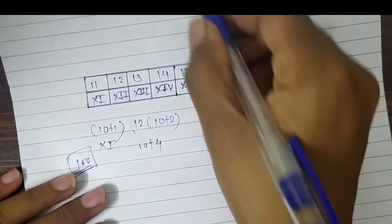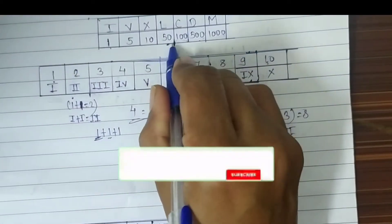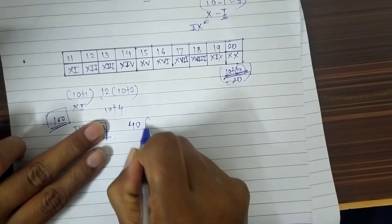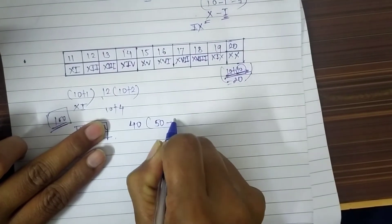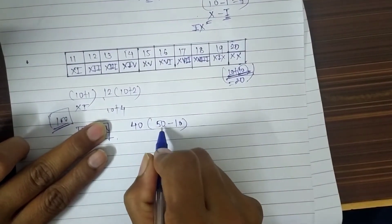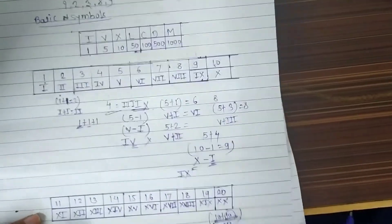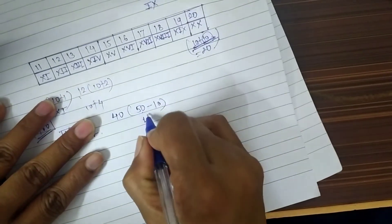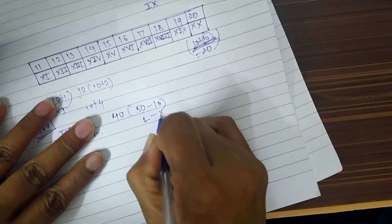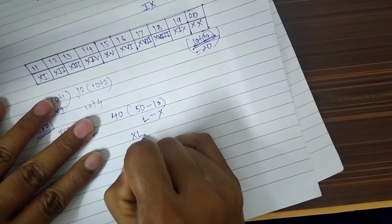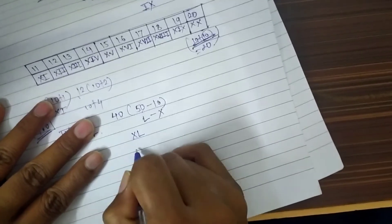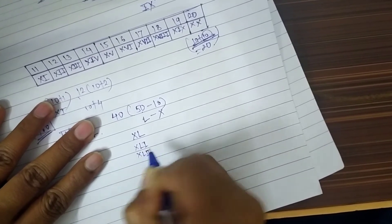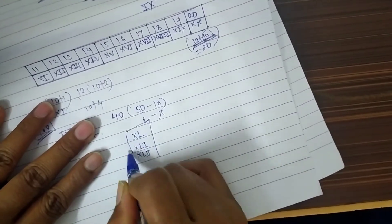For 50 you use L. For 40, we divide it as 50 minus 10, so we write X before L — giving XL. 41 is written as XLI, 42 as XLII, and so on. Remember it.